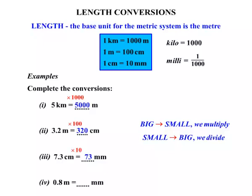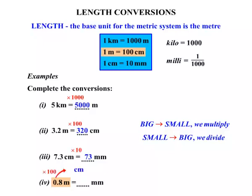Our final example: zero point eight metres equals how many millimetres? Changing metres to millimetres actually requires two conversions. We know one metre is a hundred centimetres, and one centimetre equals ten millimetres. So changing zero point eight metres to centimetres first, we multiply by a hundred to get eighty centimetres. Then changing eighty centimetres to millimetres requires multiplying by ten. Eighty times ten is eight hundred. So zero point eight metres equals eight hundred millimetres.